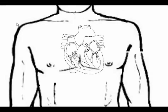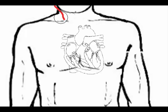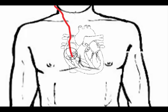With temporary pacing systems there's usually only one wire. It's often put in through the internal jugular, usually on the right-hand side. It can be put in through the subclavian or the femoral, but the internal jugular is preferred. It comes down in the superior vena cava, crosses the right atrium through the tricuspid valve, and by twisting the wire it's brought to end up in the tip of the right ventricle — a single wire that just stimulates the right ventricle.